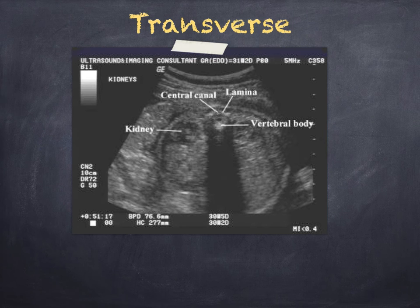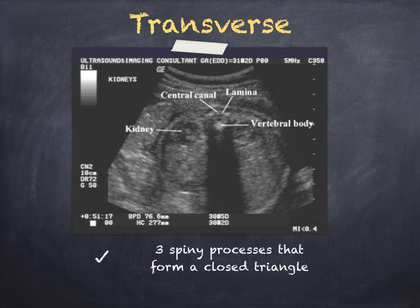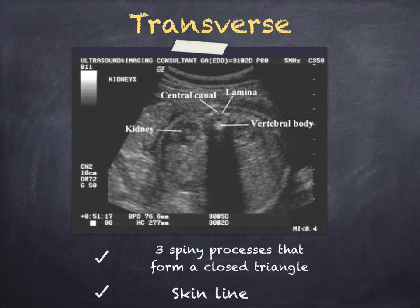Here's a simple example of the transverse view you're looking for. As you can see there are three spinous processes here that make that nice closed triangle, and the skin line is nicely demonstrated.